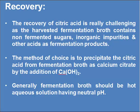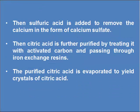The last and most important point is purification of citric acid. The recovery of citric acid is challenging as the harvested fermentation broth contains non-fermented sugars, inorganic impurities, and other acids as fermentation products. The method of choice is to precipitate the citric acid from fermentation broth as calcium citrate by the addition of calcium hydroxide. The fermentation broth should be a hot aqueous solution at neutral pH. Then sulfuric acid is added to remove the calcium in the form of calcium sulfate. Citric acid is further purified by treating with activated carbon and passing through ion exchange resins. The purified citric acid is then evaporated to yield crystals of citric acid. Thank you.